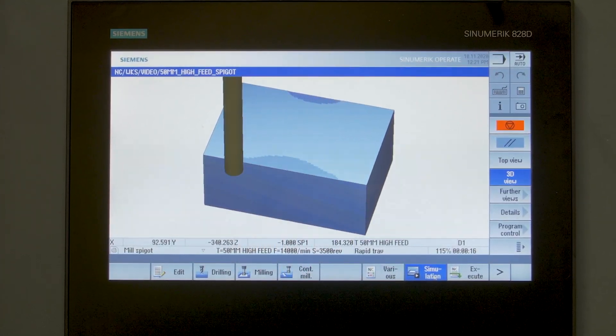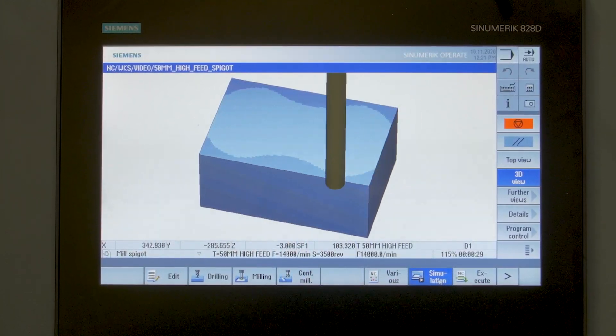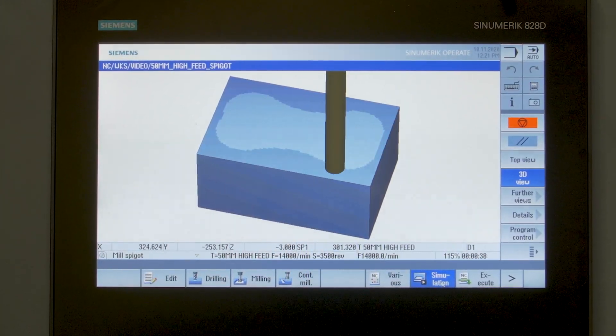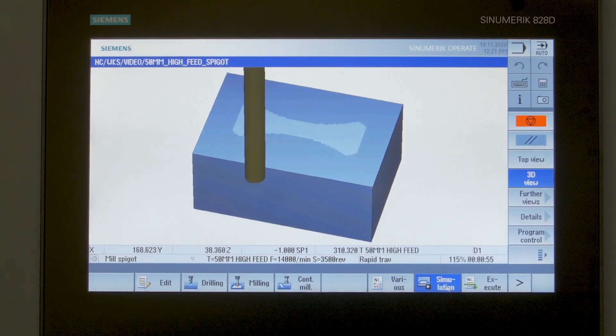such as through spindle coolant, 4th or 5th axis rotary table, Renishaw or Hydenine tool setting or measurement probes, and with all this metal removal you may require a swarf conveyor.